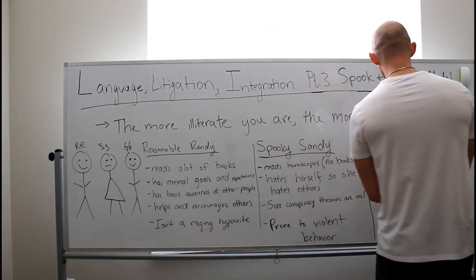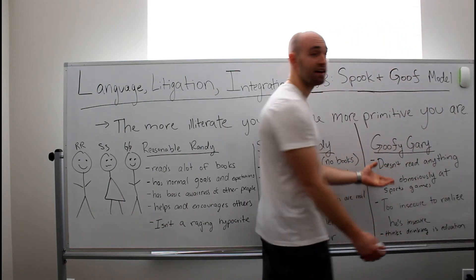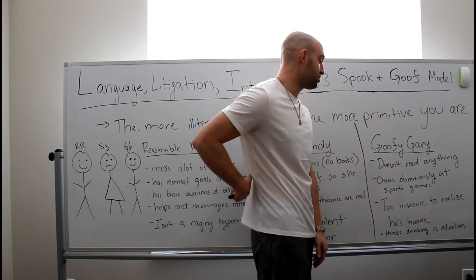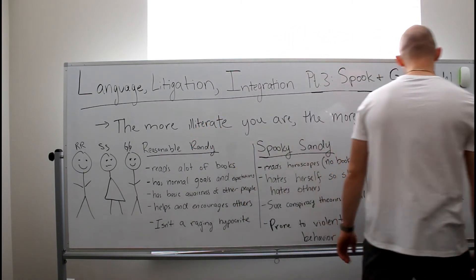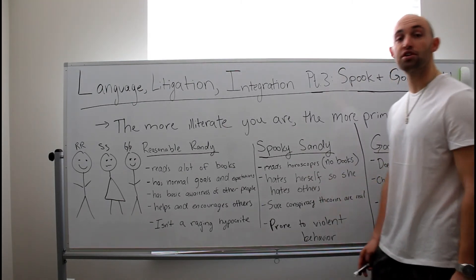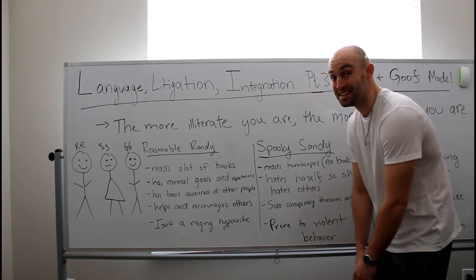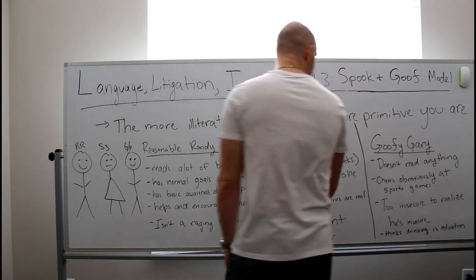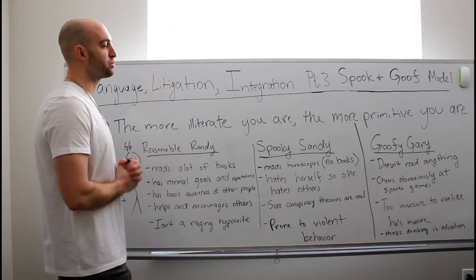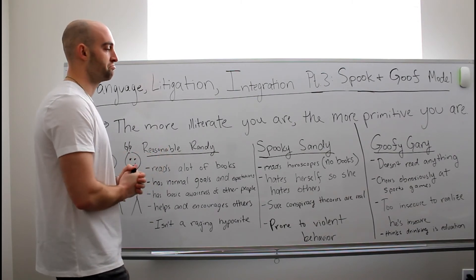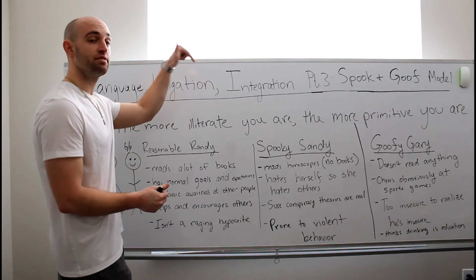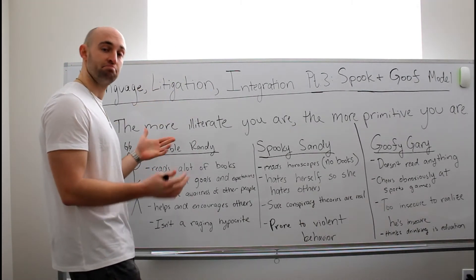And our third character is Goofy Gary. Goofy Gary doesn't read anything. He doesn't even read a horoscope. Goofy Gary cheers obnoxiously really loud at sports games. Goofy Gary is too insecure to realize he's insecure. So he dumps that on other people. He is so insecure, he talks about himself all the time and doesn't even realize he does it. And finally, Goofy Gary thinks drinking is education. So now what we're going to do is we're going to take these three characters, we're going to put them in real life scenarios and see how they would act. And then we're going to look at the data of our own society and see how our society is. Let's have a look.